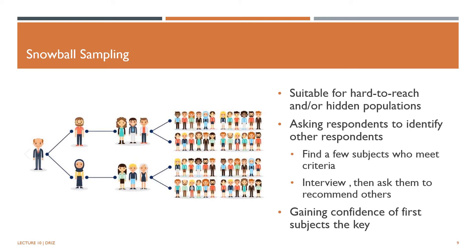Snowball sampling involves two steps. We begin by identifying someone who meets the criteria for inclusion in the study. Finding just a small number of individuals willing to identify themselves and take part in the research may be quite difficult, so the aim is to start with just one or two people. The next step is to ask these subjects to recruit others who also meet the criteria. For ethical reasons, these new research participants should come forward themselves rather than being identified by the initial subjects. The process continues until sufficient units have been identified to meet the desired sample size.